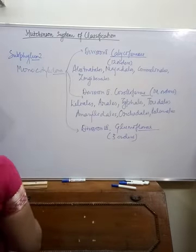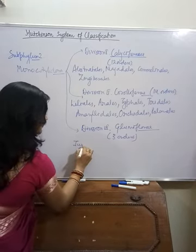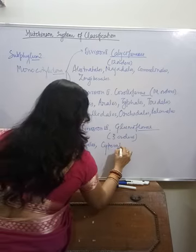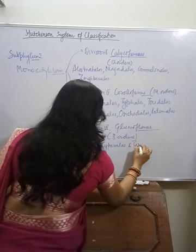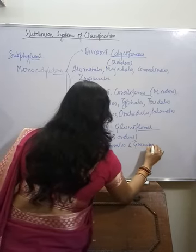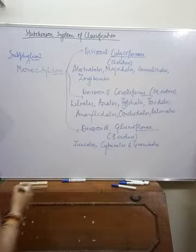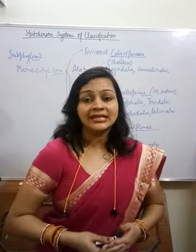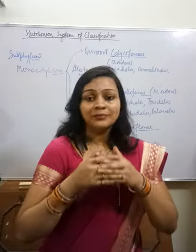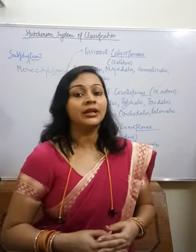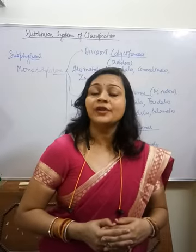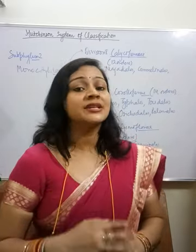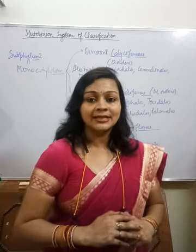Division three of Monocotyledons is Glumiflorae, which includes three orders: Juncales, Cyperales, and Graminales. This was Hutchinson's System of Classification, his 24 basic principles and classification outline. In the next video, we will look at a new system of classification.